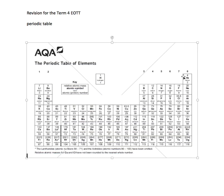Over in group 7, the halogens, these have 7 electrons in the outer shell. So they want to gain 1 electron in order to have a full 8 electrons in the outer shell. They form -1 ions, looking to achieve full outer shells of either 2 or 8 electrons.